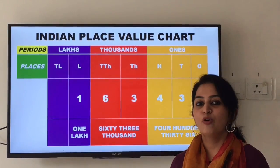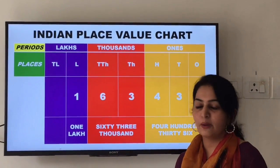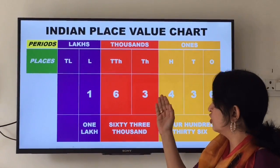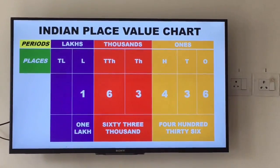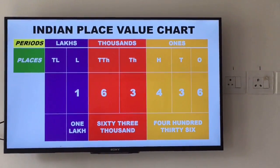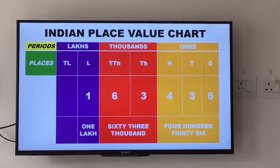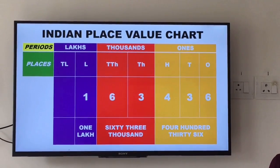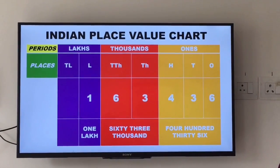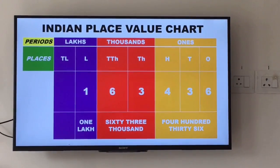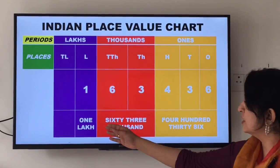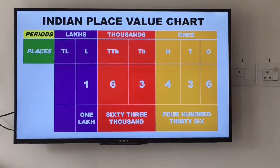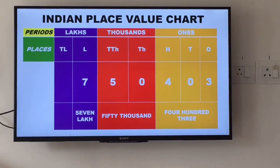Let's see how to arrange a six-digit number in the place value chart. Consider the number 1,63,436. While reading a number, all the digits in the same period are read together, and the name of the period — except the ones — is read along with them. So the number shown in the place value chart is read as: one lakh, sixty-three thousand, four hundred thirty-six.